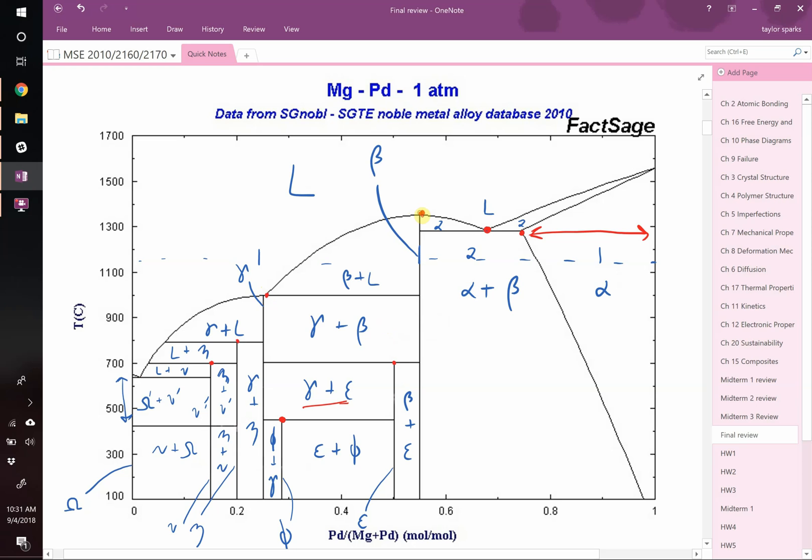We have a congruent melting point up here. Technically, the single phases are also congruent, but that's the congruent melting point that we'd label. And that's the phase diagram labeling.